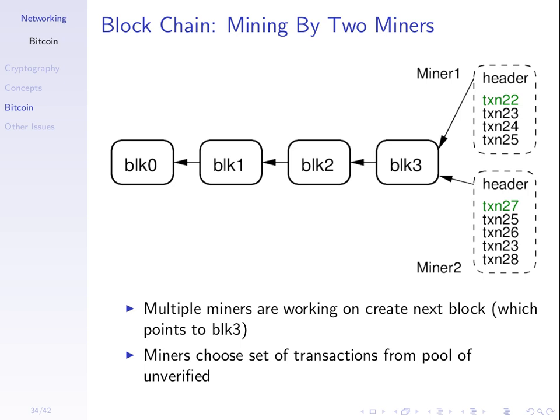New transactions are created and sent to people to try and verify. Let's say we already have four blocks — block zero up to block three — containing verified transactions. Then there are some new transactions: transaction 22, 23, and so on. There are two different users — user one and user two — called miners. What they're trying to do is take some unverified transactions and include them in a block to create a new block to add to the chain.